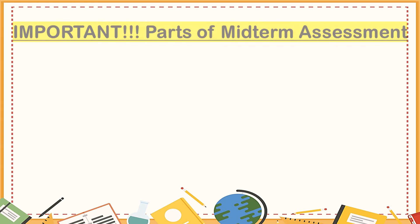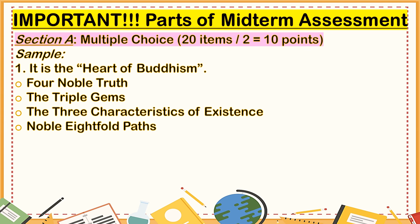Let me explain to you the parts of the midterm assessment. Section A is multiple choice, 20 items, divided by 3 equals 10 points. For example, the question is 'It is the heart of Buddhism.' You are going to choose your answer from the choices given. If you choose 'the triple gem,' you tick the circle and it will be blackened — meaning that is the letter of your choice. You are not going to circle A, B, C, or D; you tick the circle and it will be blackened.